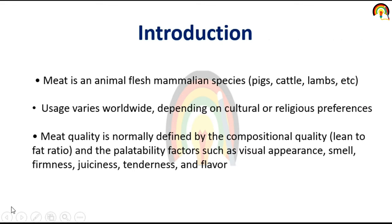Meat is an animal flesh of mammalian species. Use varies worldwide depending on cultural or religious preference. Meat quality is normally defined by the compositional quality and the palatability factors such as visual appearance, smell, juiciness, tenderness, and flavor.